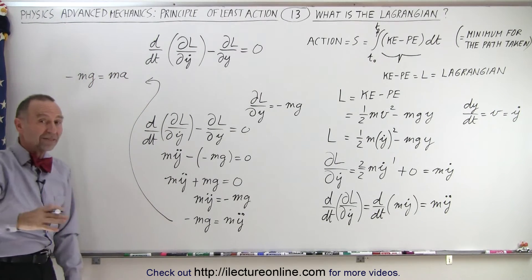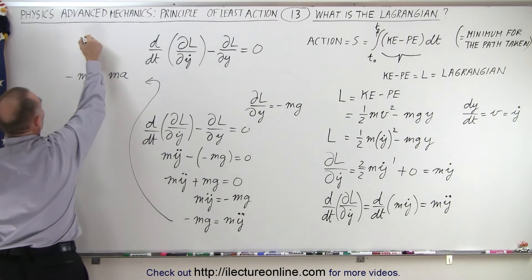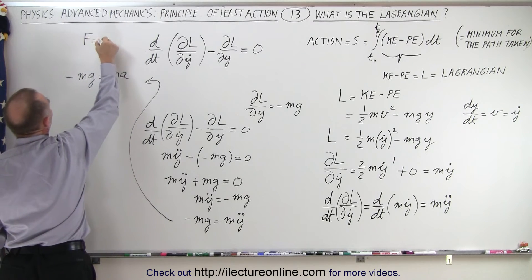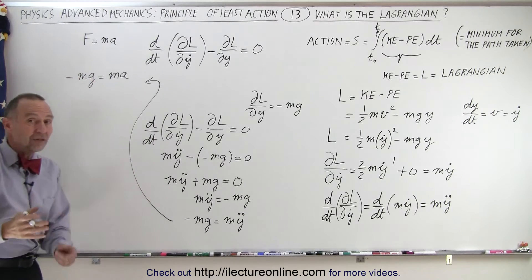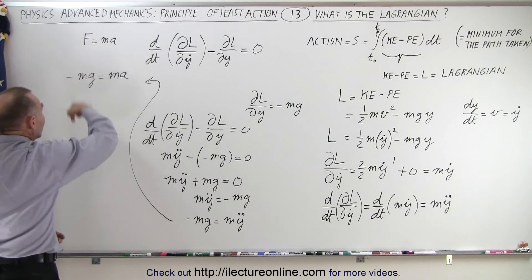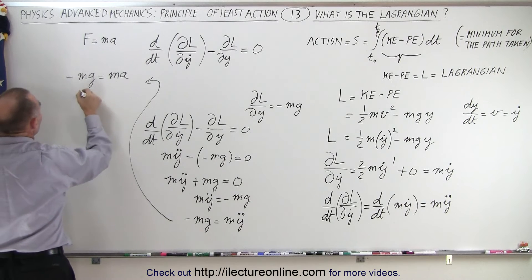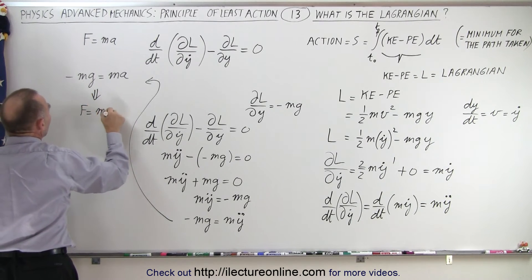Now m a, of course, is the mass times acceleration. That's the right side of the equation f equals m a, and the left side, well, m g is the force due to gravity, and minus means the force is acting downwards. In essence, this is the equation f equals m a.